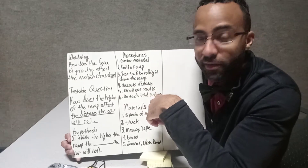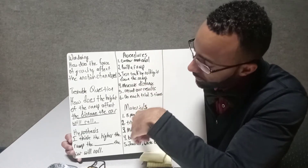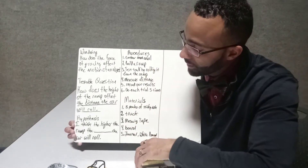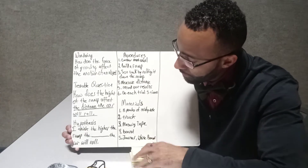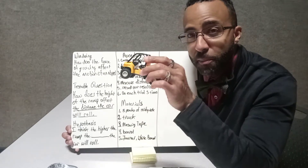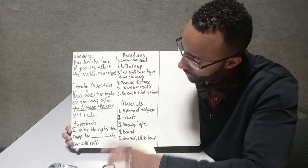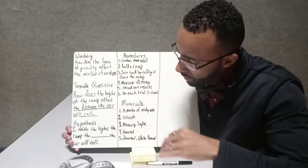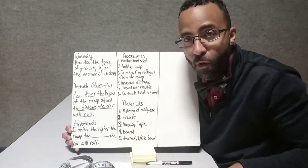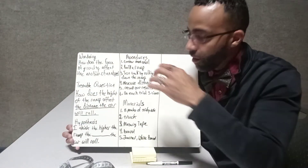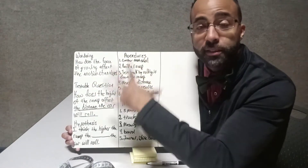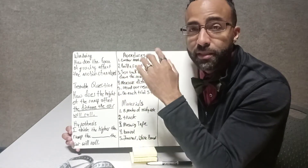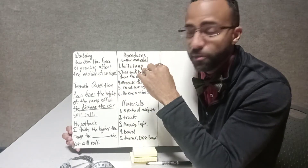Then we had to get our materials. We decided we needed three packs of sticky notes to change the height of the ramp, a bumblebee truck, a measuring instrument, a board for a ramp, and our journal or something to record our information on.